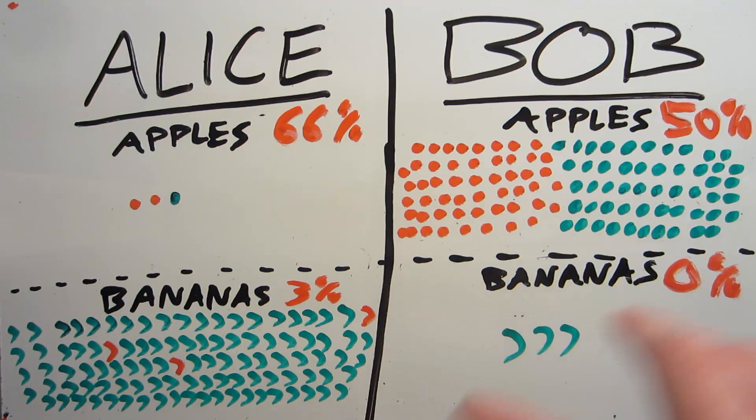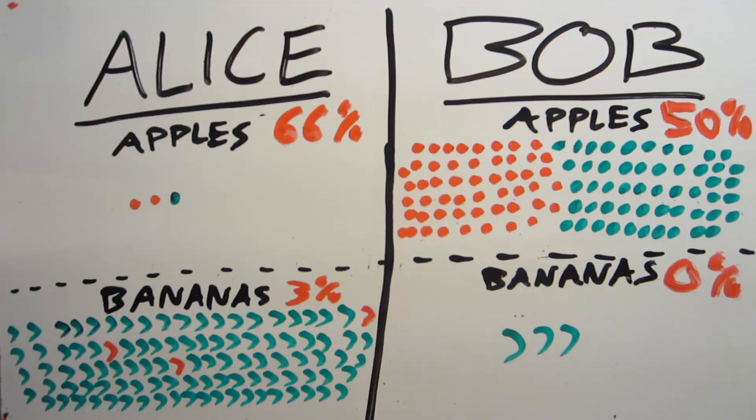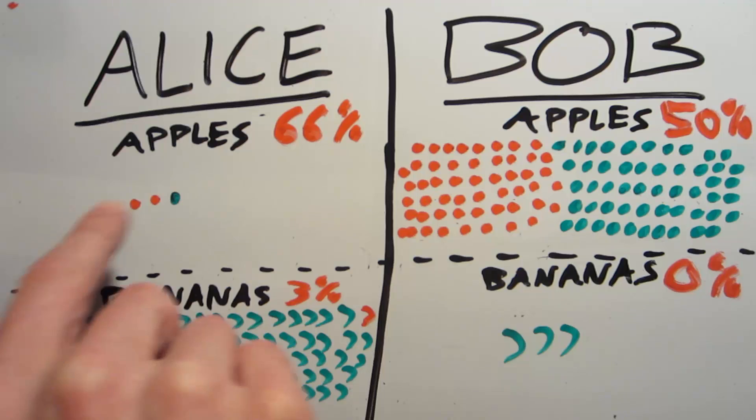The simple fact that Bob is mostly selling apples means that he'll have a higher overall bad fruit rate. Now there's even room in there for him to have better sources of each fruit. Like in our example, maybe his true rate of bad bananas is 0, and maybe Alice's true rate of bad apples is 66.